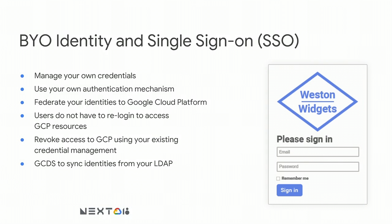For SSO to work, users redirected to GCP need to have accounts already known to Google. To help with that, we have a tool called GCDS — Google Cloud Directory Sync — that will automatically sync all of your users and groups into Google. Using federation with SSO is a very common configuration used by most of our largest customers, with some syncing up to a few hundred thousand accounts.